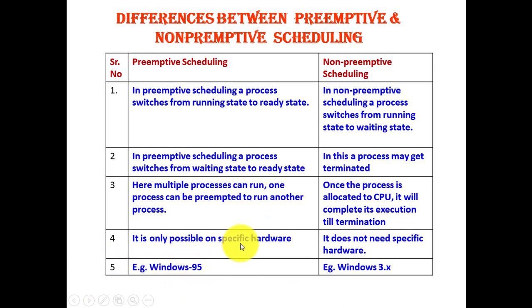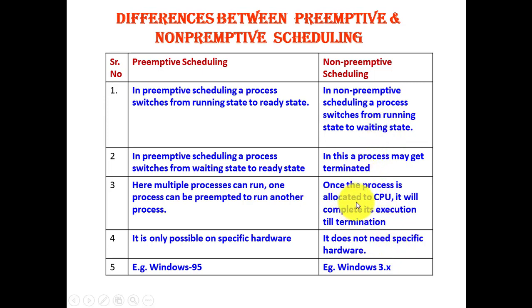In non-preemptive scheduling, only two things happen: the process switches from running state to waiting state, or it gets terminated. Once a process is allocated to the CPU, it will complete its execution until termination. Since it executes linearly, it does not need any specific hardware. This type of non-preemptive scheduling was used in Windows 3.x.